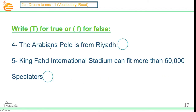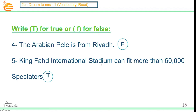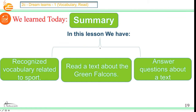Number four: The Arabian Pele is from Riyadh. Number five: King Fahd International Stadium can fit more than 60,000 spectators — that's true. This is the end of our class today. In this lesson, we have recognized vocabulary related to sport like trophy, match, and league. We read the text about the Green Falcons and we asked questions about the text.